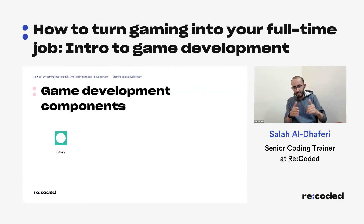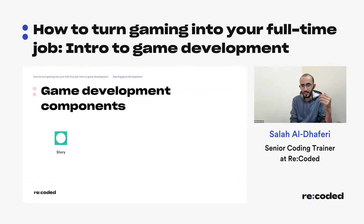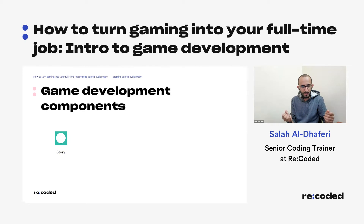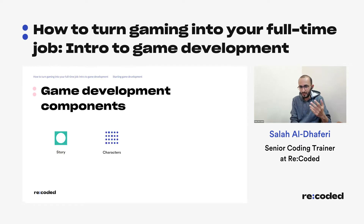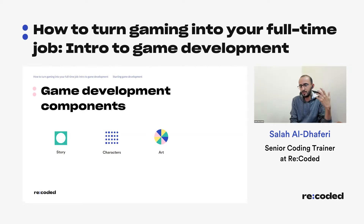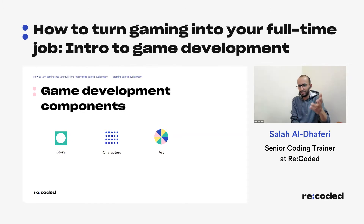Now that we understand the process, let's break down what a game itself contains — the game development components. First, the story: where does the game start and end? Is there a backstory? All of these things help make a very immersive game. Then the characters, adding depth to their development. Next, the art — don't think of it as only triple-A 3D design; it could be 2D pixel art top-down, just like Undertale, which performed very well despite a simpler art style.